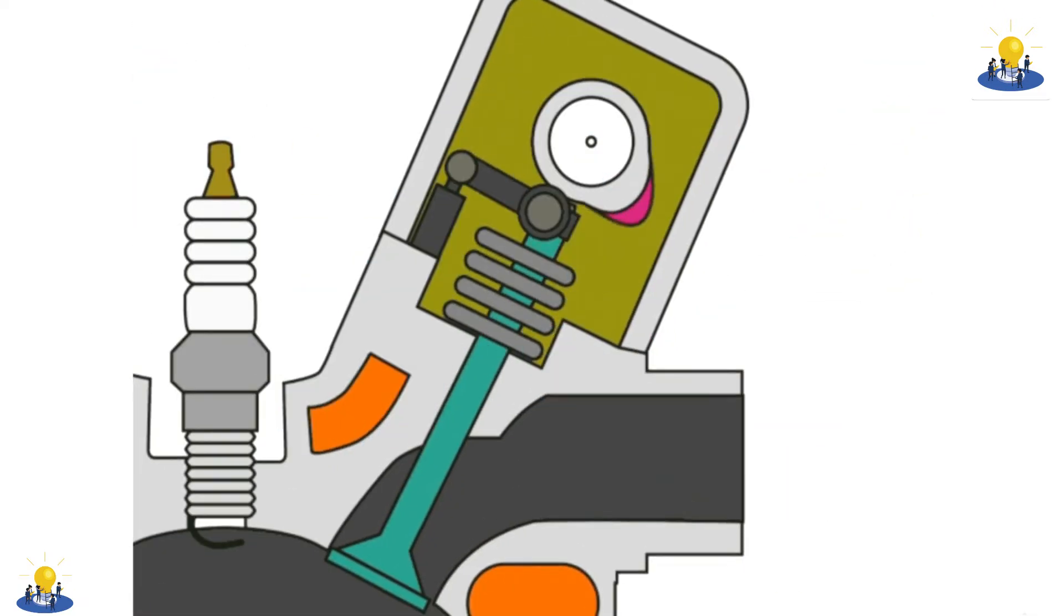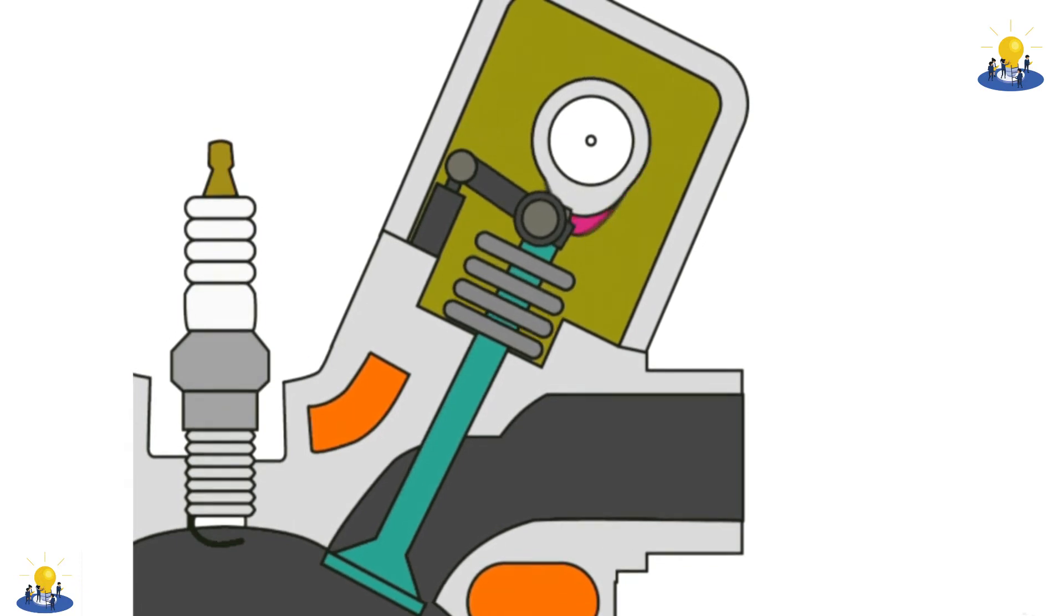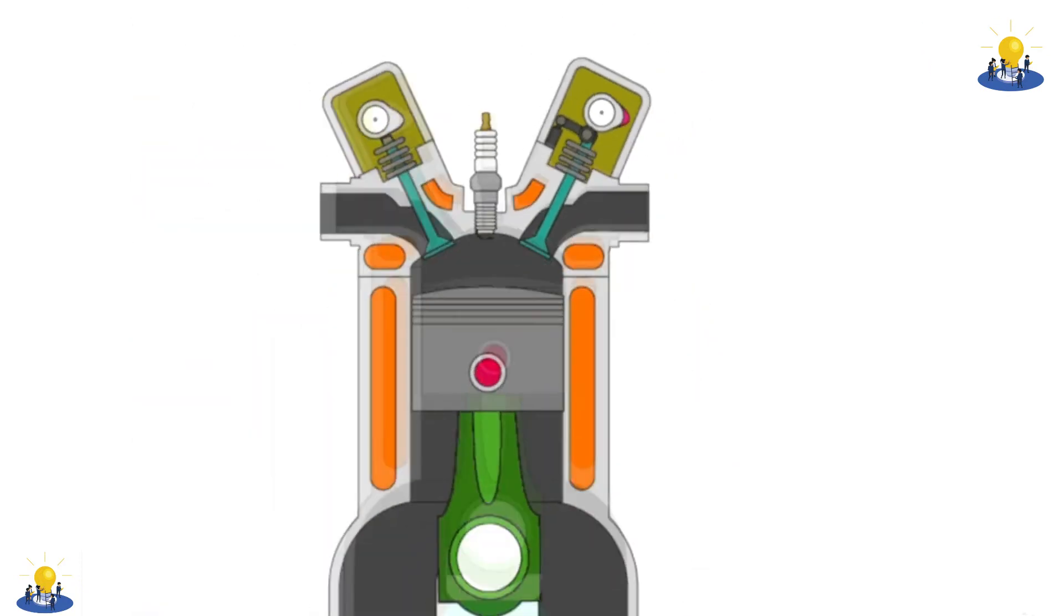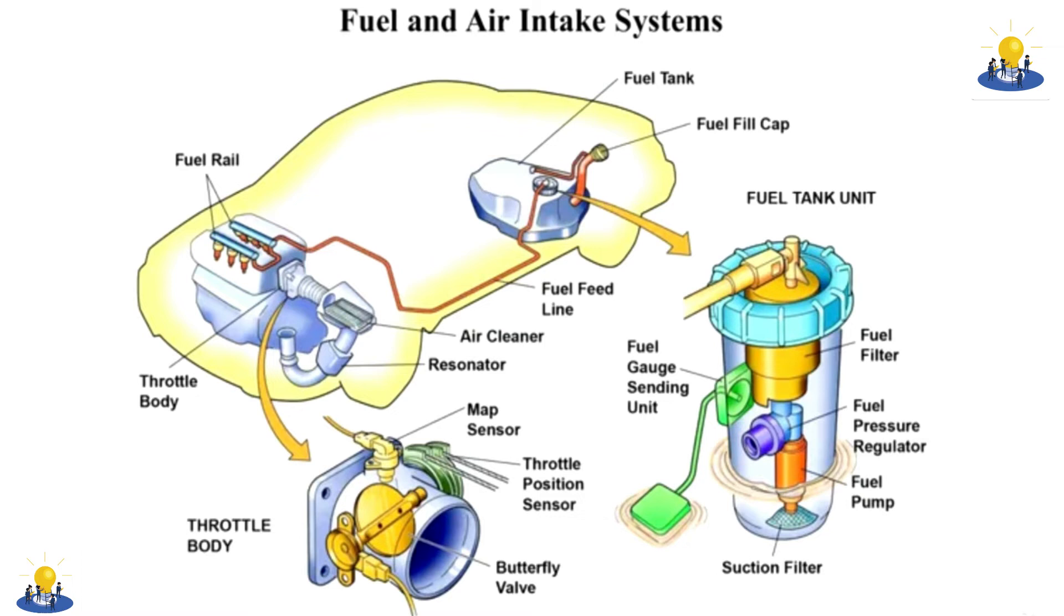When the engine is running, fuel flows from the fuel pump, usually located inside the fuel tank at the rear of the vehicle, through the fuel filter to the fuel injector into the intake manifold and then into the combustion chamber.